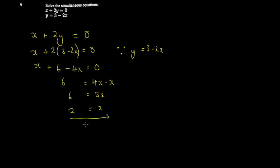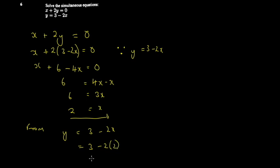For simultaneous equations you also need to find y. From y equals 3 minus 2x, substitute x equals 2: y equals 3 minus 2 times 2, which is 3 minus 4, equaling negative one. Therefore x equals two and y equals negative one.